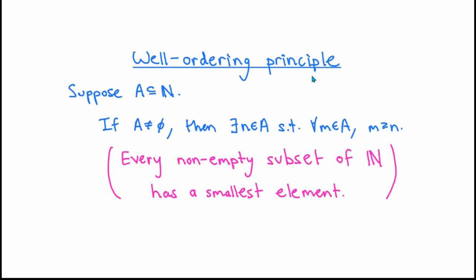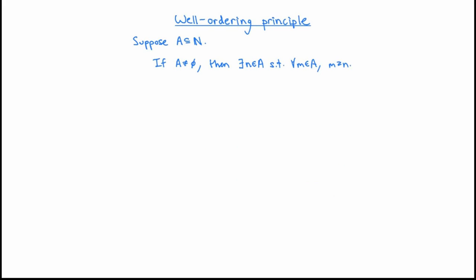Next let's talk about the well-ordering principle. Suppose that we have a subset A of the natural numbers. The well-ordering principle is the statement that if A is not the empty set, then there exists an element n in A such that for every m in A, m is bigger than or equal to n. To put it more succinctly, the well-ordering principle is the statement that every non-empty subset of the natural numbers has a smallest element. I think that this is something that we all believe is true without proof, but it turns out that it's actually possible to derive the well-ordering principle from the principle of mathematical induction, instead of simply assuming that it's true.